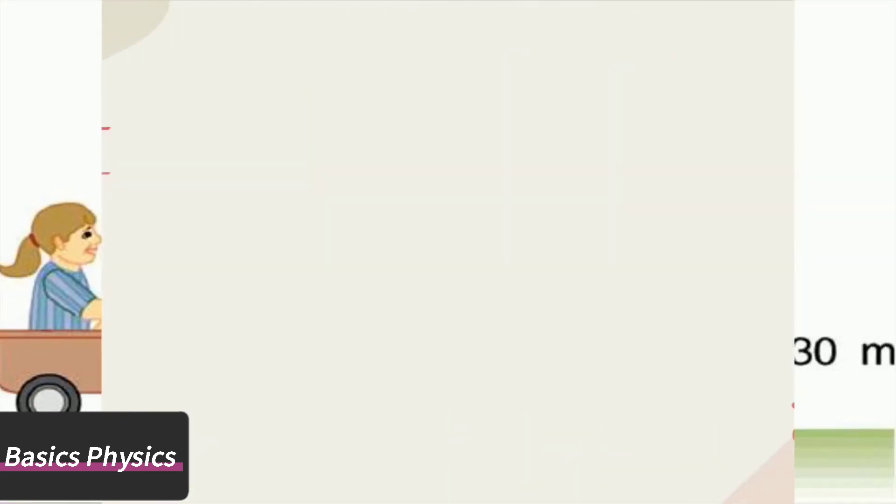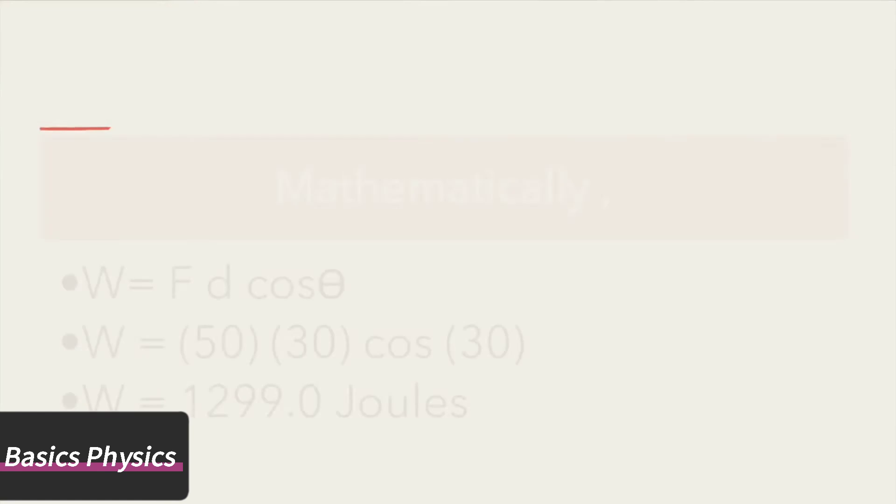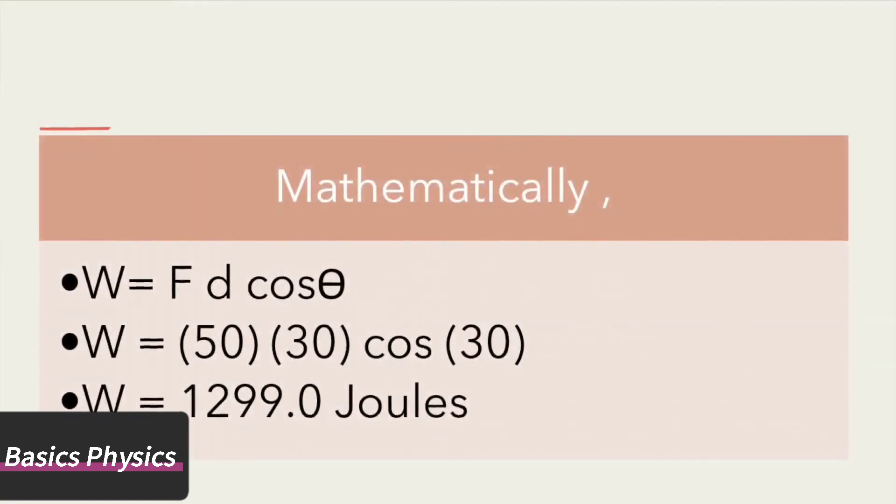Mathematically, work done is equal to the product of force, displacement, and cos θ. According to the given values, force is 50 newtons, displacement is 30 meters, and θ is 30 degrees. The answer is 1299 joules.